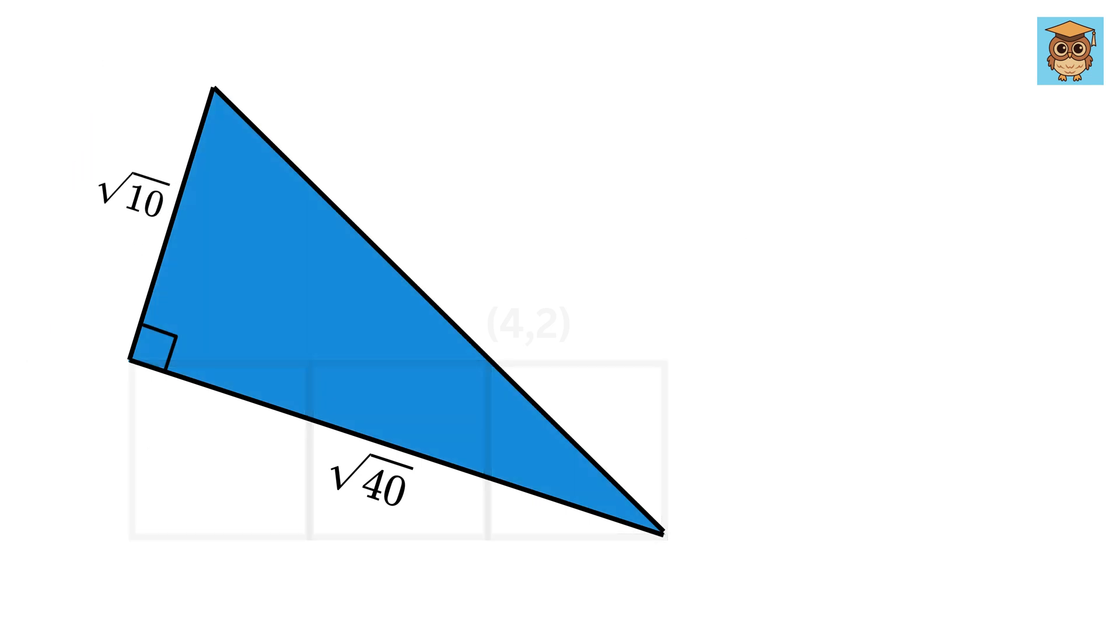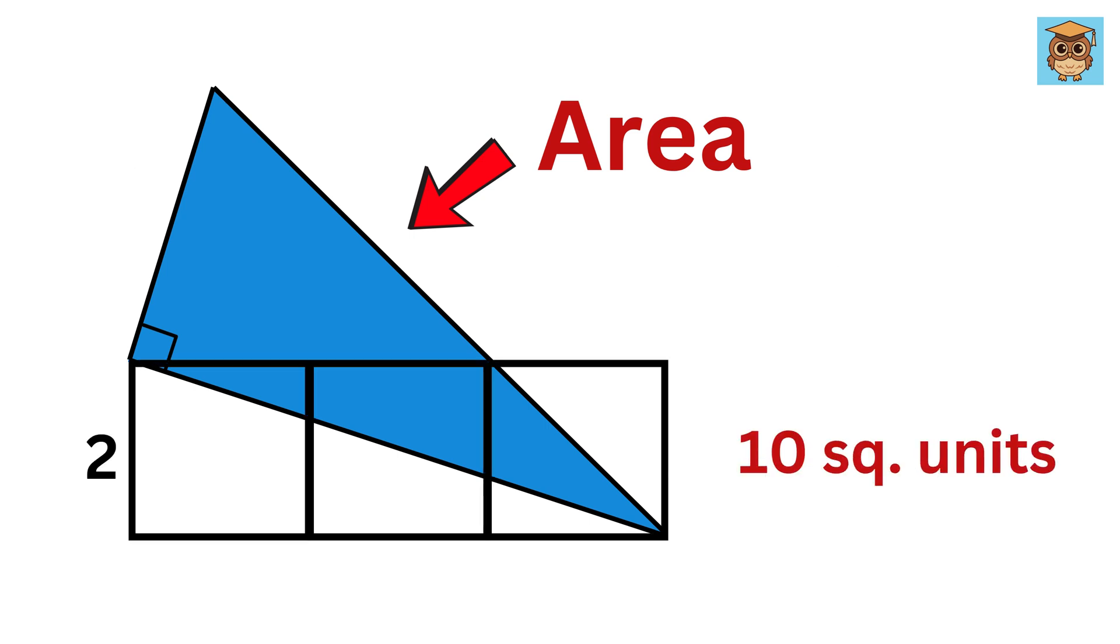So far so good. Now this final part is the easiest one, where the area of this blue right triangle will be base times its height by two, or root 40 times root ten by two, or root four hundred by two. Root four hundred equals twenty, so the answer will be ten square units.